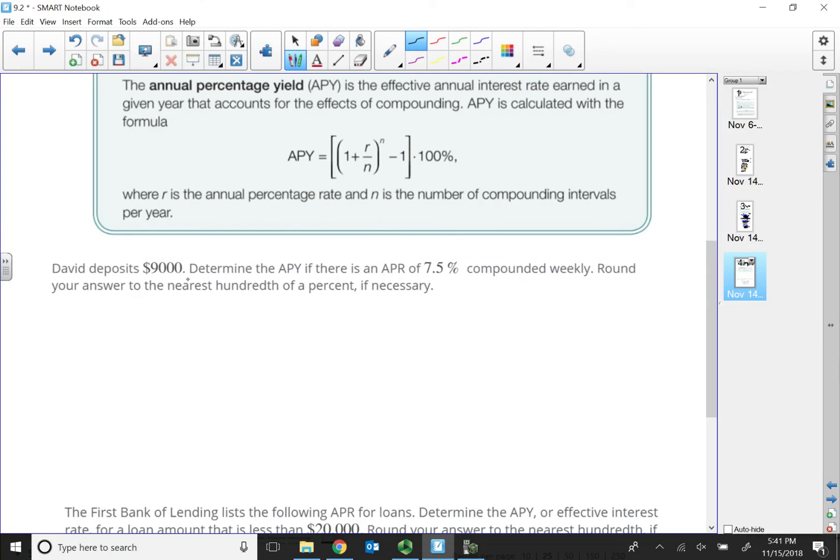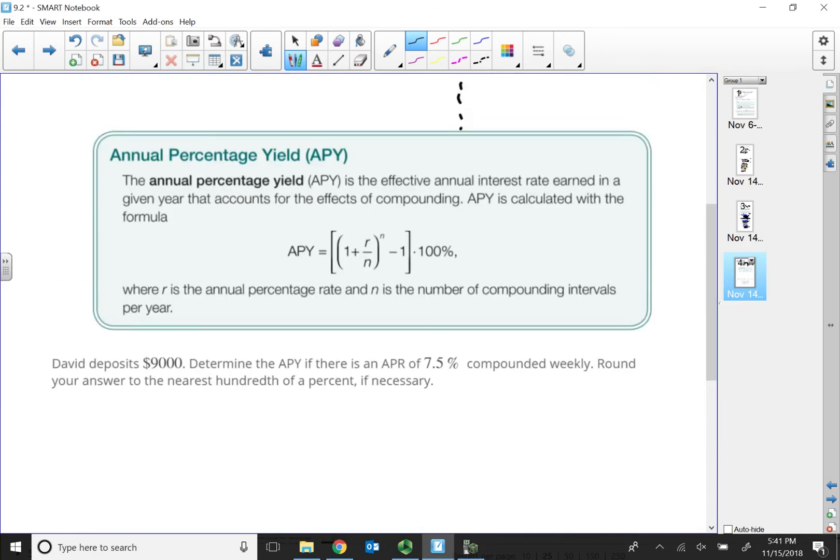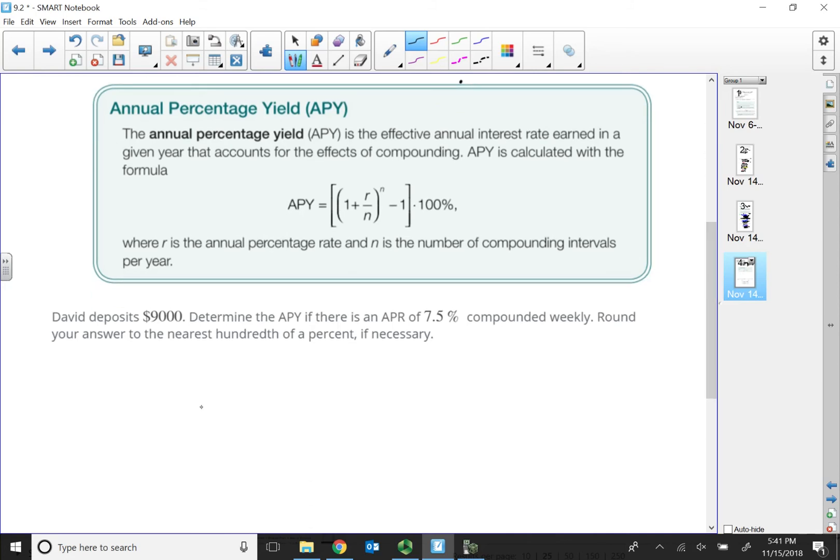What's my annual percentage yield? So, let's say if we deposit $9,000, determine the APY if the APY is at 7.5% compounded weekly. So, if the APY is at 7.5%, a lot of students will think the annual percentage yield is at 7.5%. That's not really the case because I'm actually compounding by the week. So, if I plug into this APY formula, then that will be 1 plus R, which is 0.075, divided by my N compounded weekly. Weekly means 52 times in a year. So, that will be divided by 52, raised into the 52 power, then minus 1, and then everything times 100.